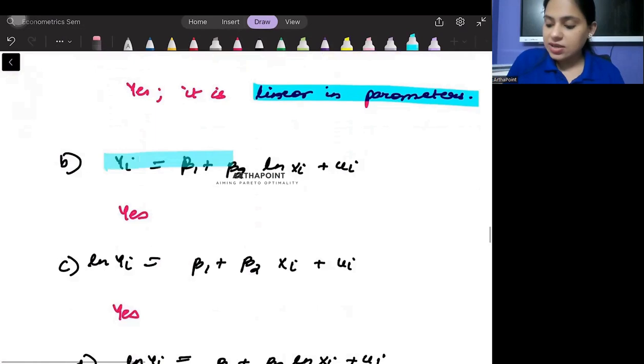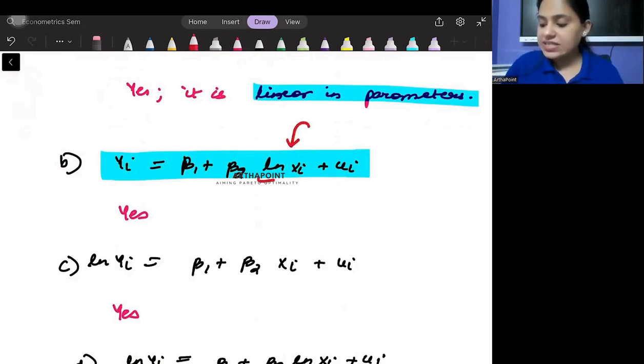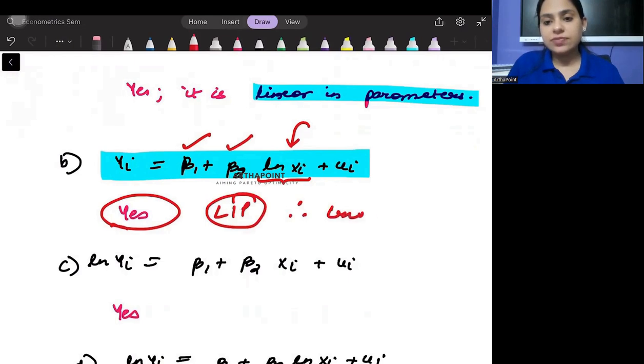Okay, try to see the second case. yi equals beta 1 plus beta 2 ln xi plus ui. So you can see that here xi is in log form. Of course, non-linear in variable. But still, betas are coming linearly. And hence, it is a linear in parameter model. Therefore, linear. Always check linearity of parameters.